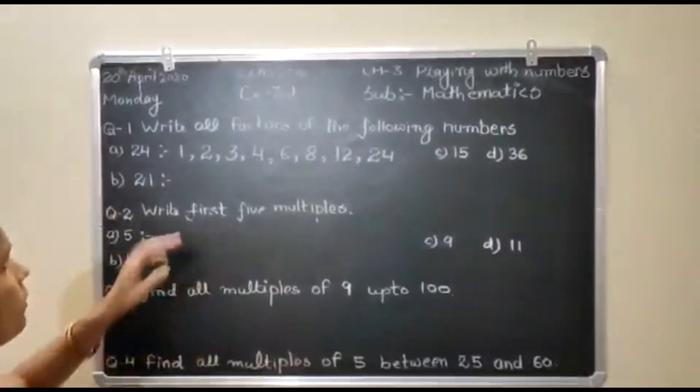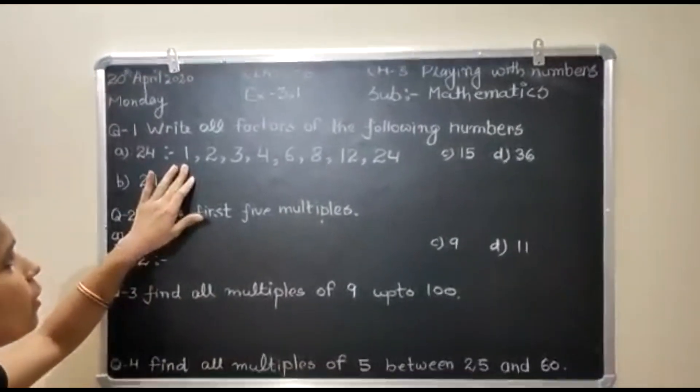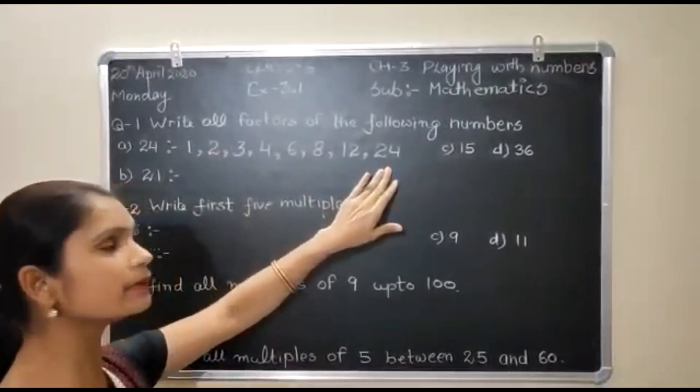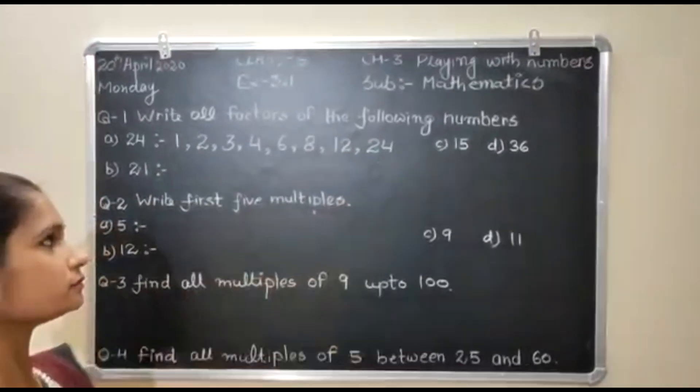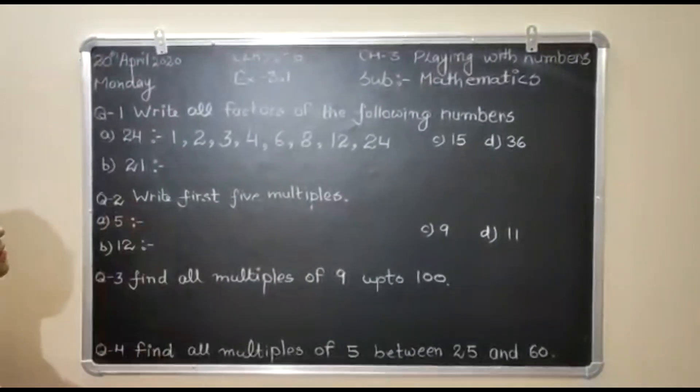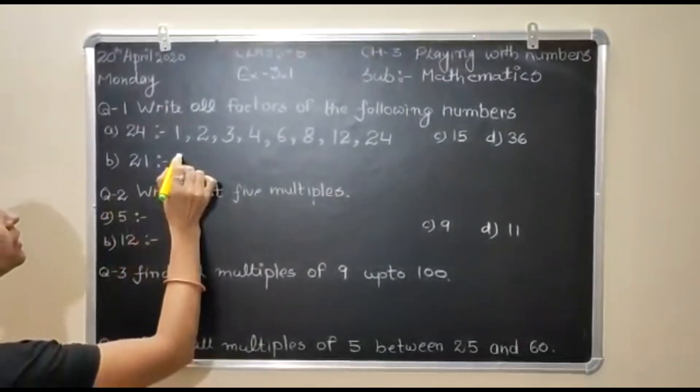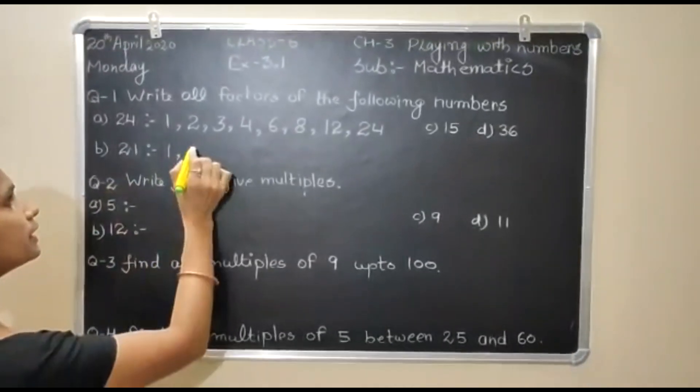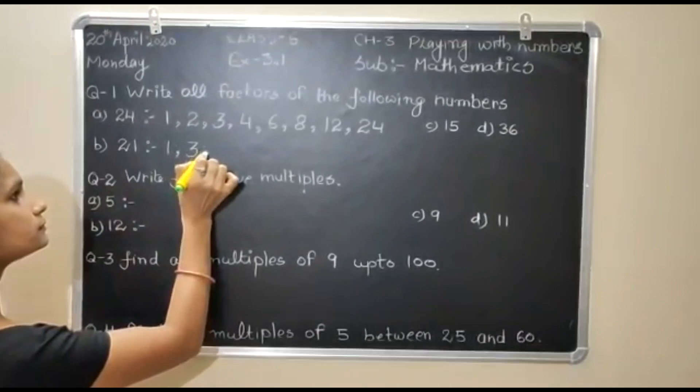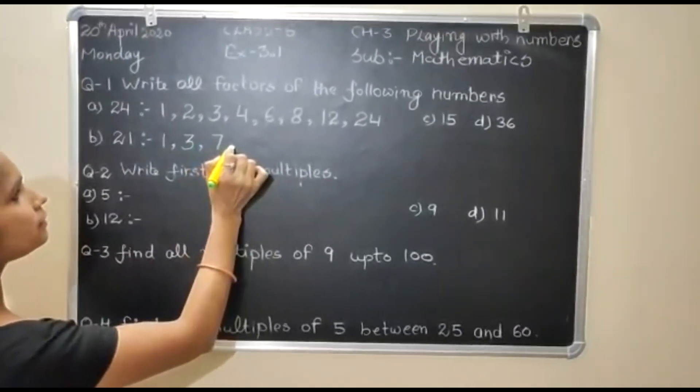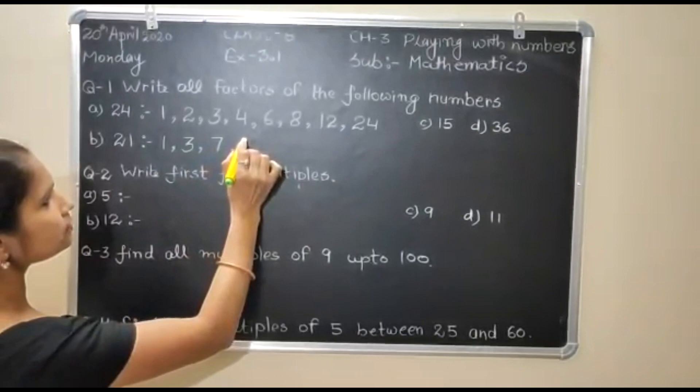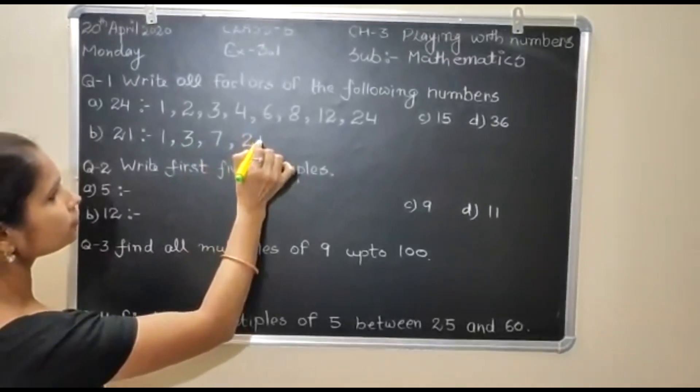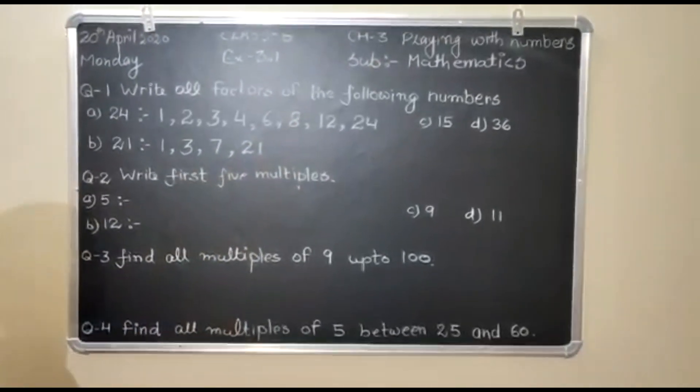The factors always start from 1 and end at the number itself. Next number is 21. It means 1, it is not divisible by 2, then 3, then 7, and last is 21. Clear students?